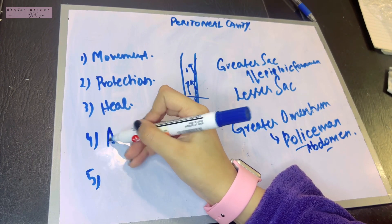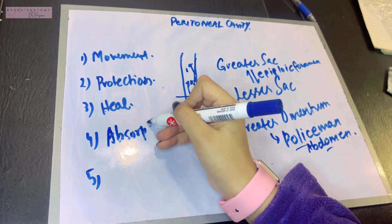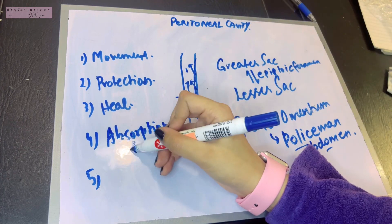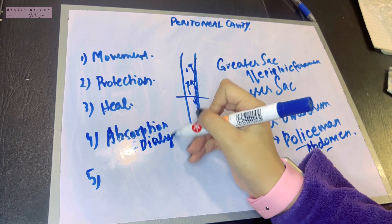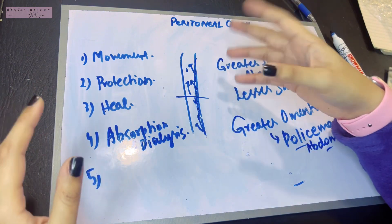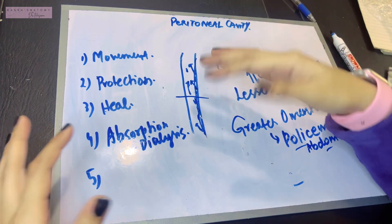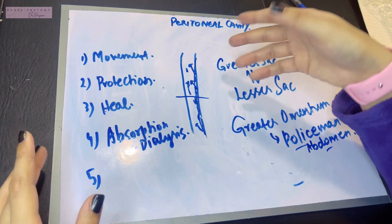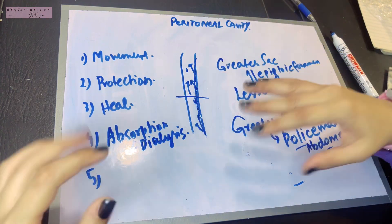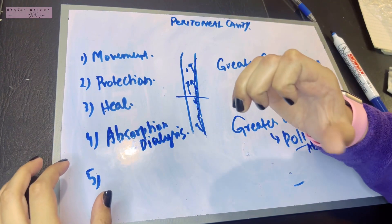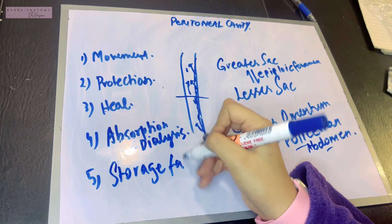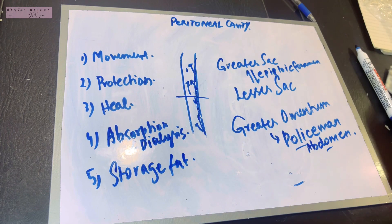The fourth function is absorption: because the peritoneum is a semi-permeable membrane, it helps with absorption. In therapeutic cases it helps with dialysis — when a patient has kidney issues and the kidneys aren't working, dialysis can be performed through the peritoneal cavity. You can also use the peritoneal cavity to administer antibiotics. The fifth function is that it serves as a storage area for fat.